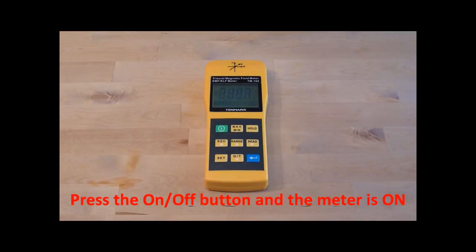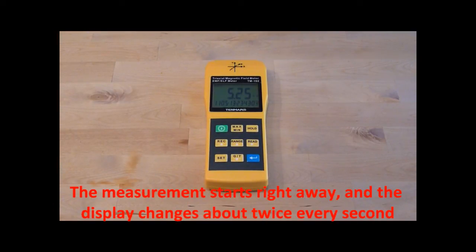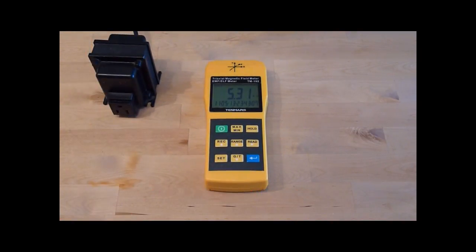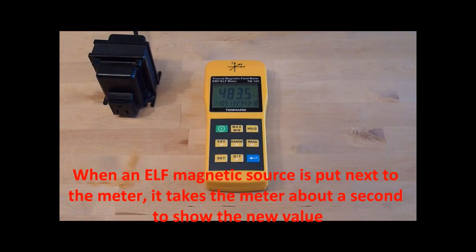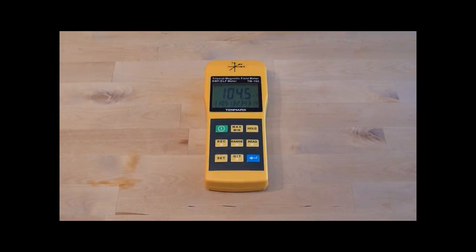Press on the on-off button and the meter is on. The measurement starts right away and the display changes about twice every second. When an ELF magnetic source is put next to the meter it takes about a second to show the new value.